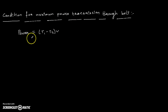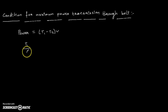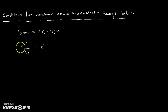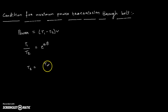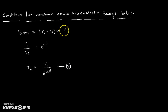We already know that the power transmitted through the belt is given as (T1 minus T2) into velocity, where T1 is the tension in the tight side and T2 is the tension in the slack side. This is Equation 1. We also know that the ratio of the two tensions T1 to T2 equals e^(μθ). This equation was derived in previous videos, and from it we can write T2 = T1 / e^(μθ). Assume this as Equation 2.